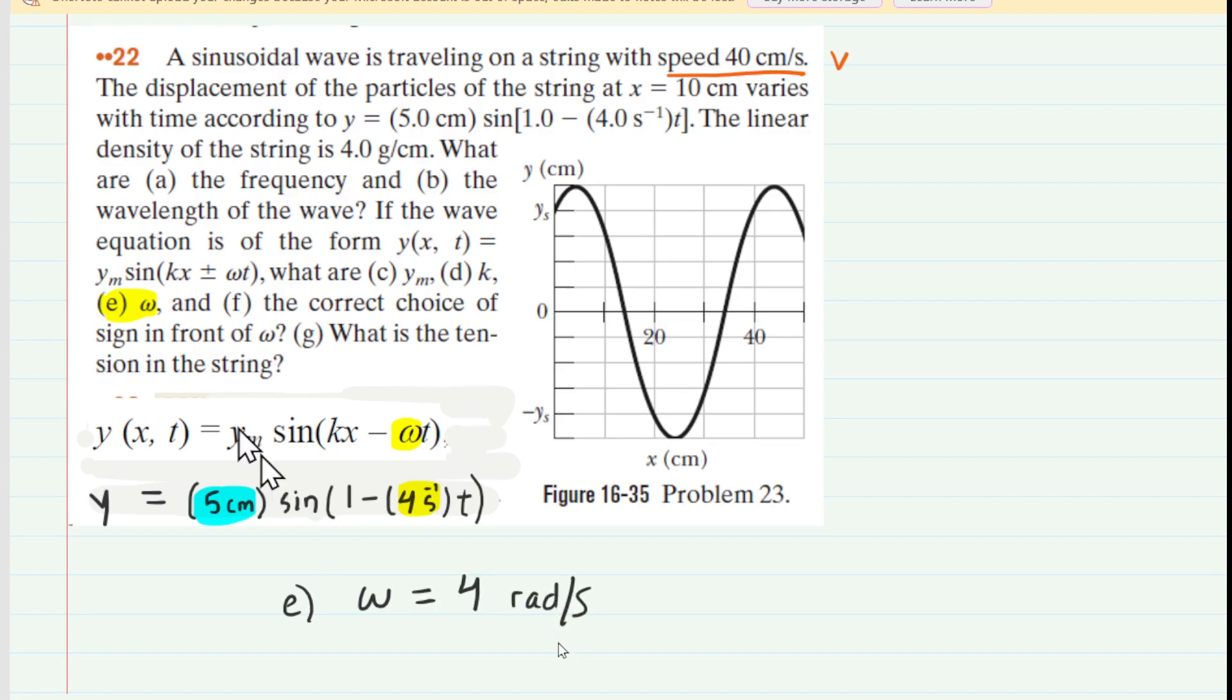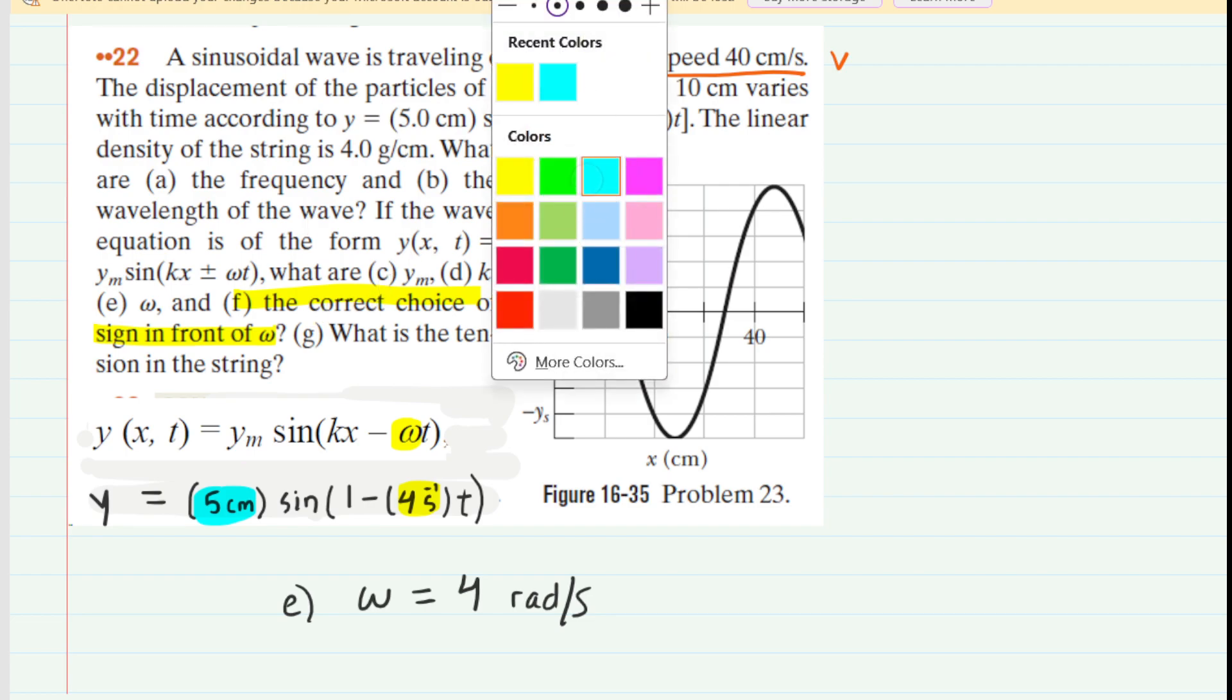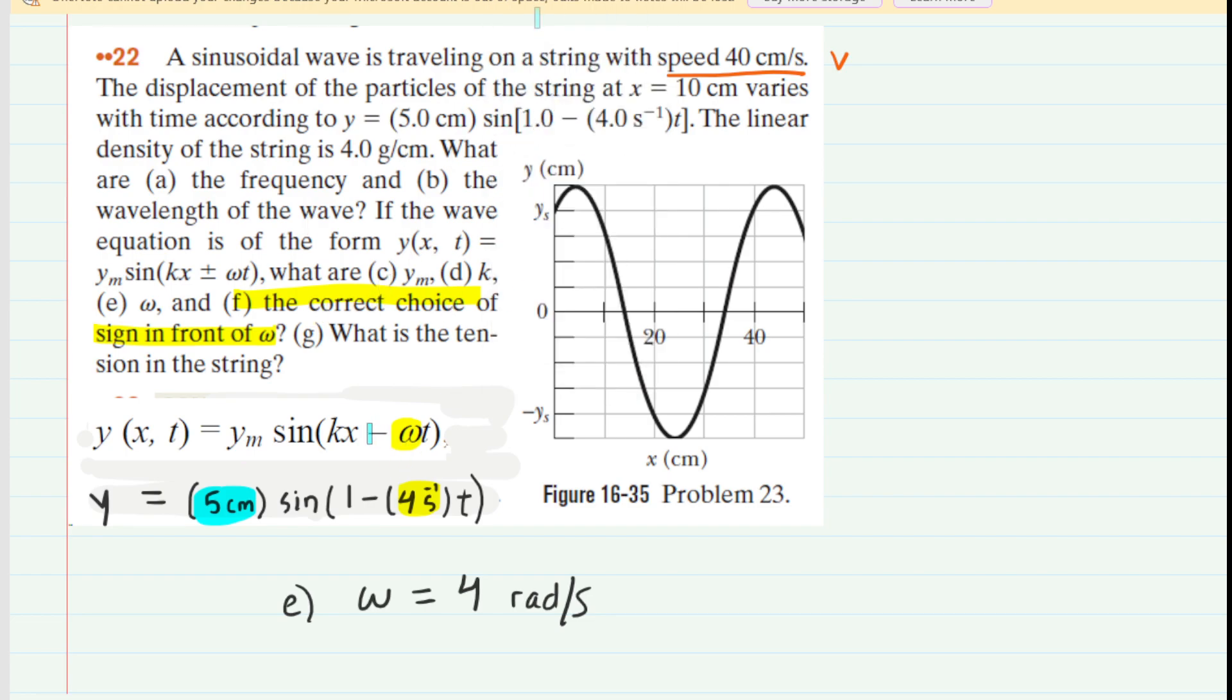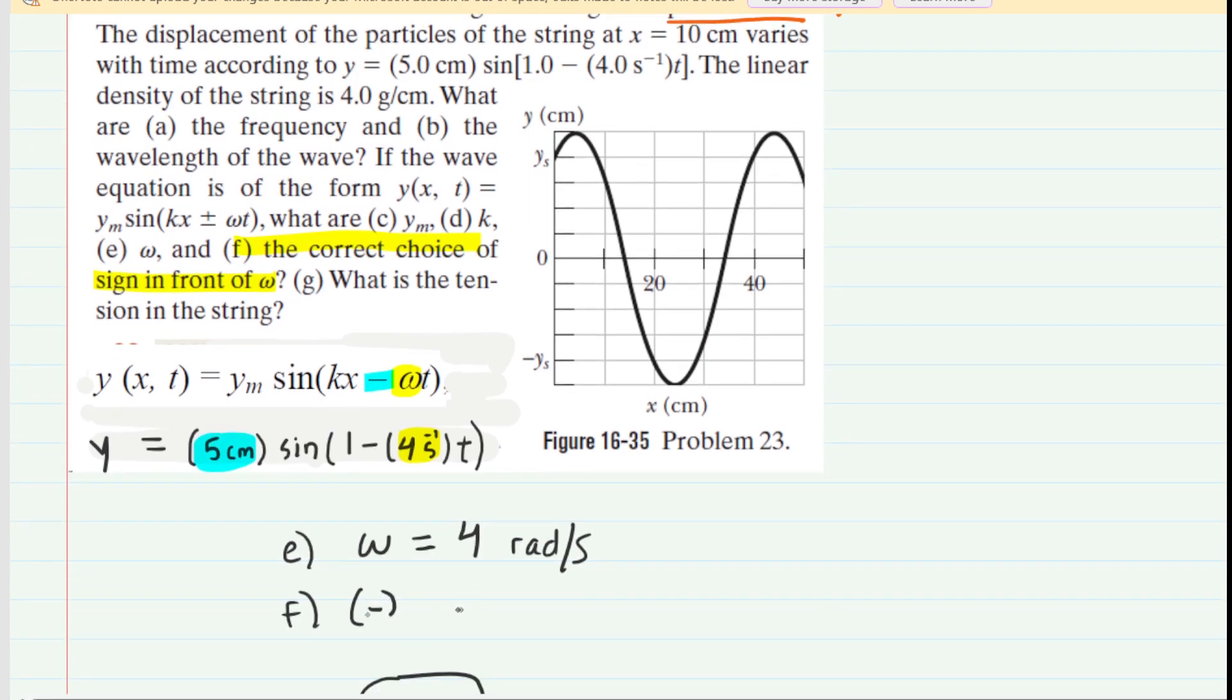In part f, they are asking us for the correct choice of sign in front of omega. Once again, simply by inspection, we can see that the equation has a negative sign in front of the omega. So the correct answer to part f would be a minus sign. And by the way, if there is a minus sign in that equation, that actually means the wave is traveling to the right. So it's sort of the opposite of what you might expect. As a side note, the wave is traveling to the right because of that minus sign.